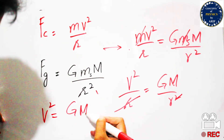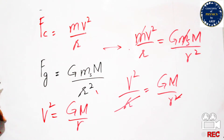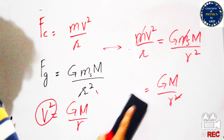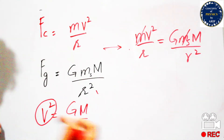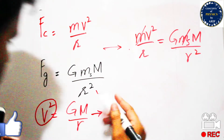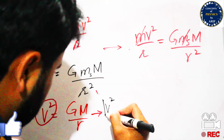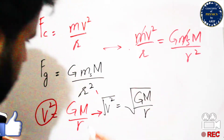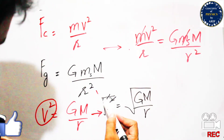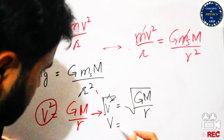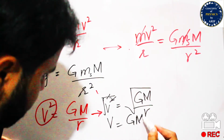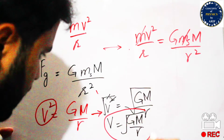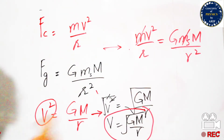Our purpose is to calculate velocity, not velocity squared, so we take the square root on both sides. The result is: v = √(GM/r). This is the final answer and is known as the orbital velocity.